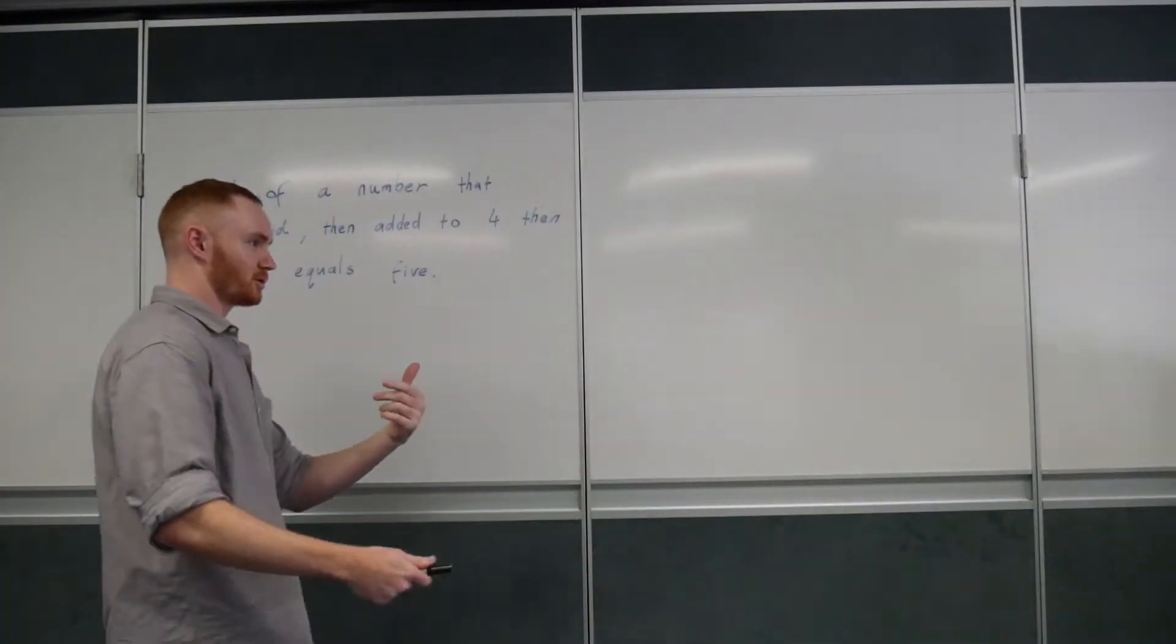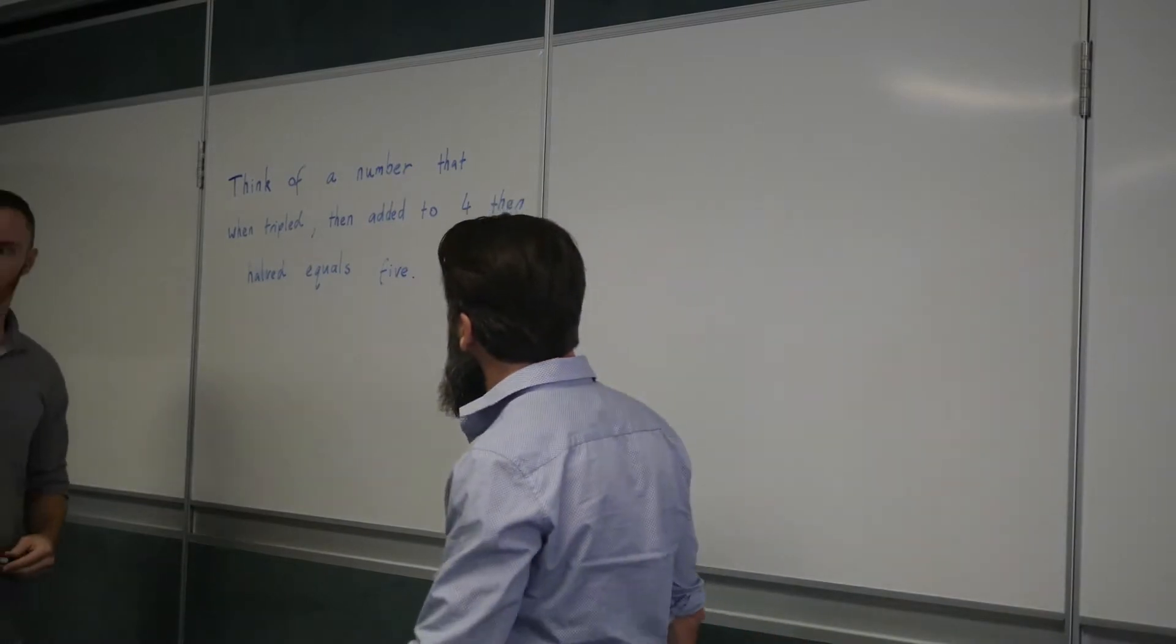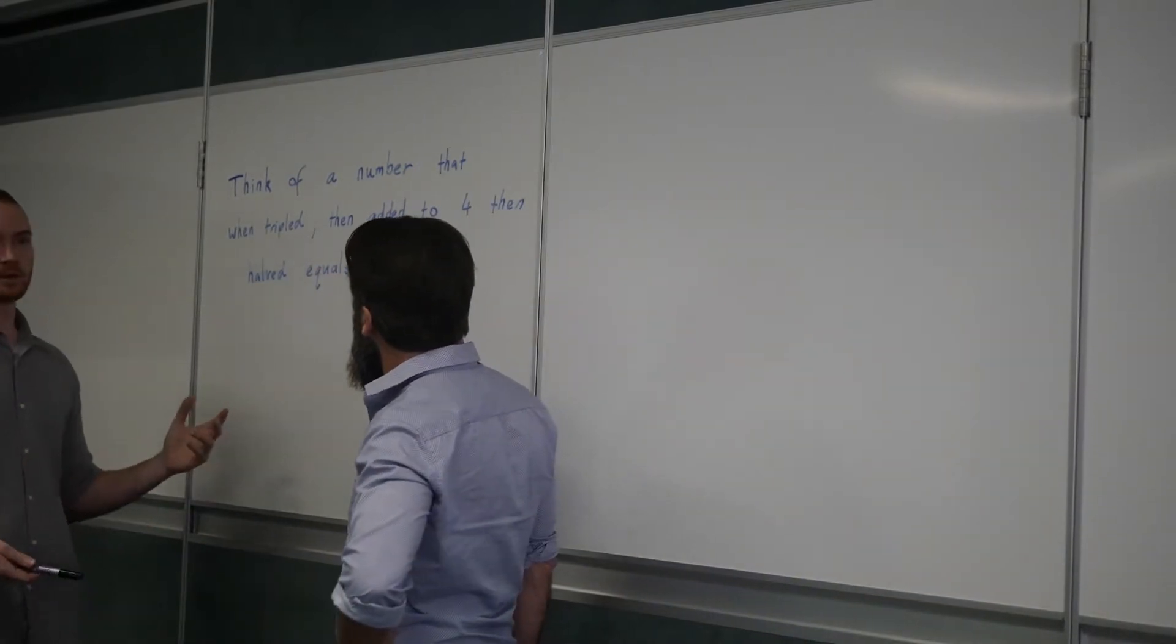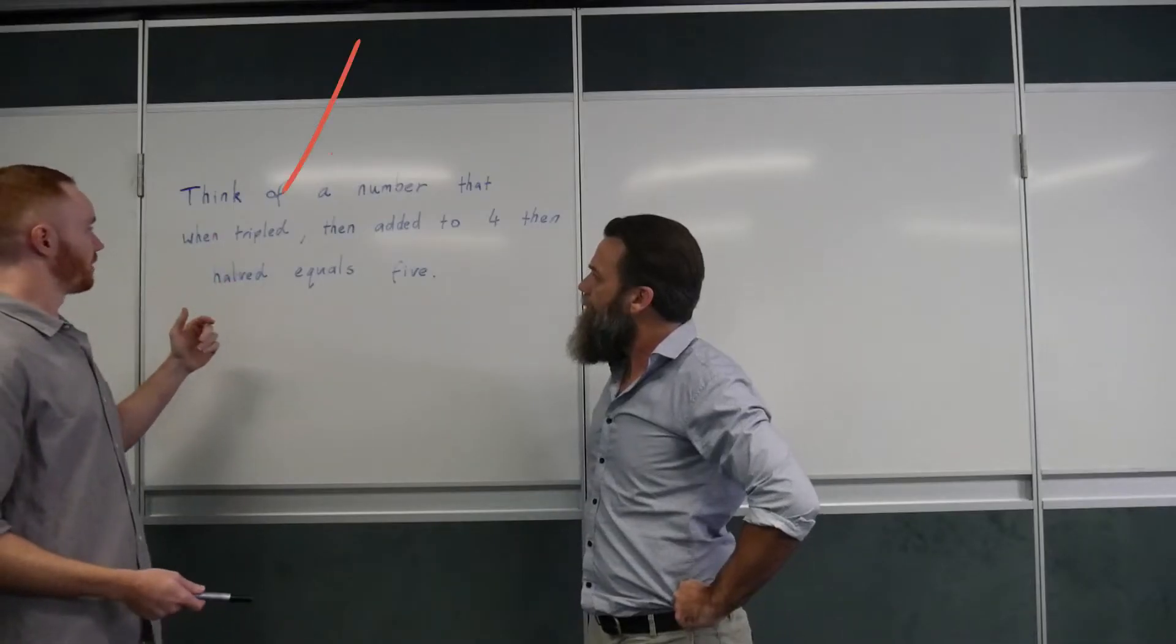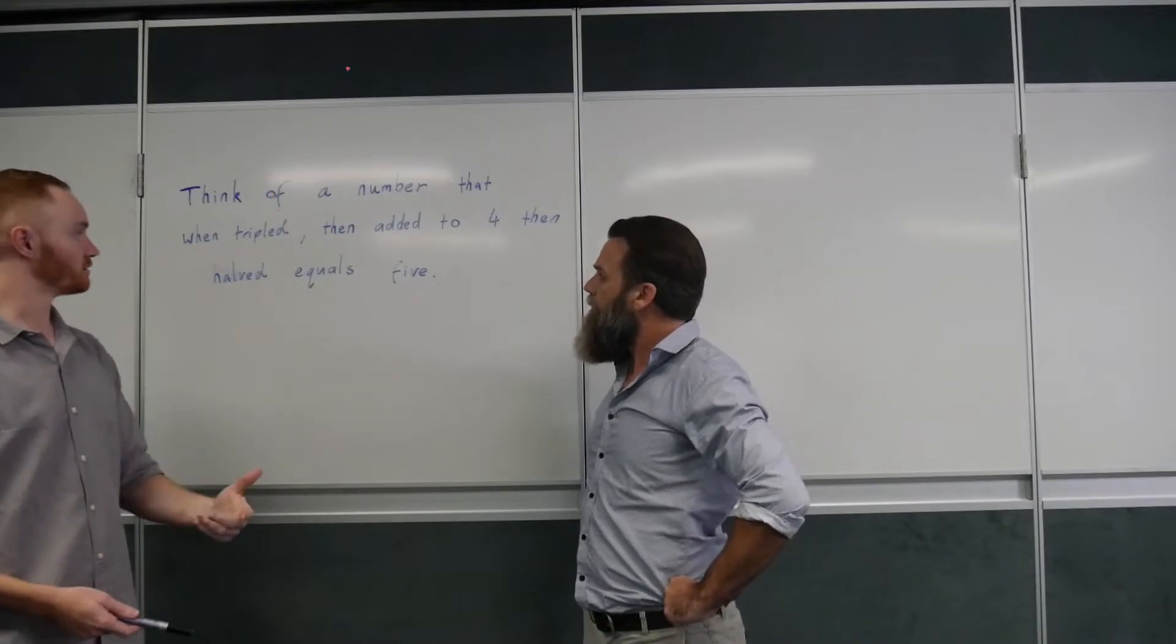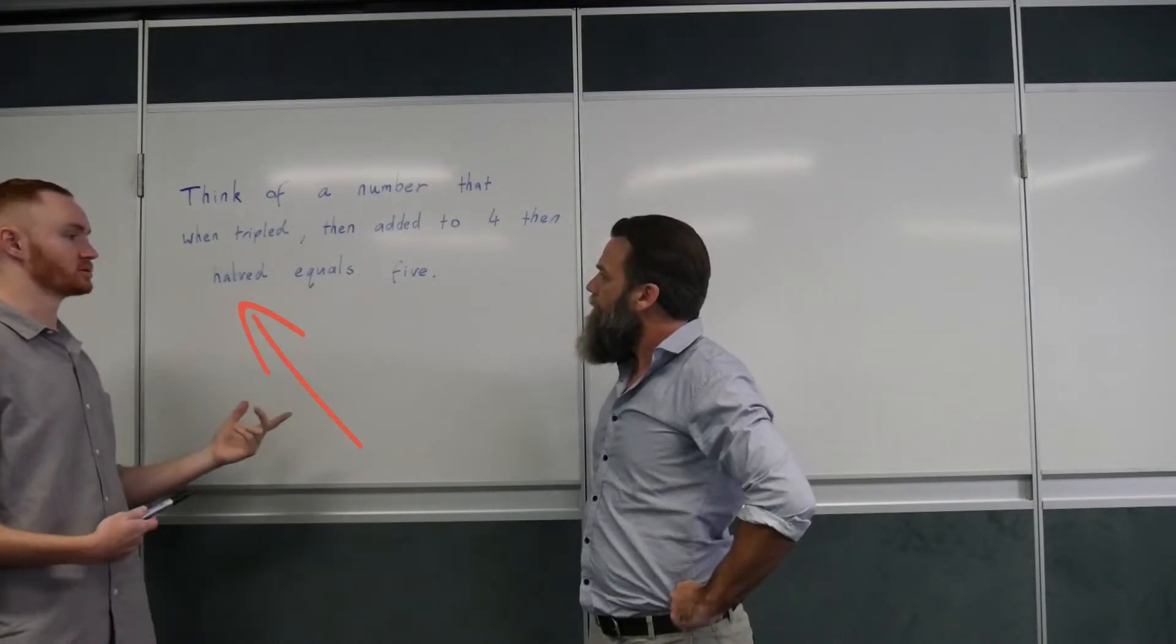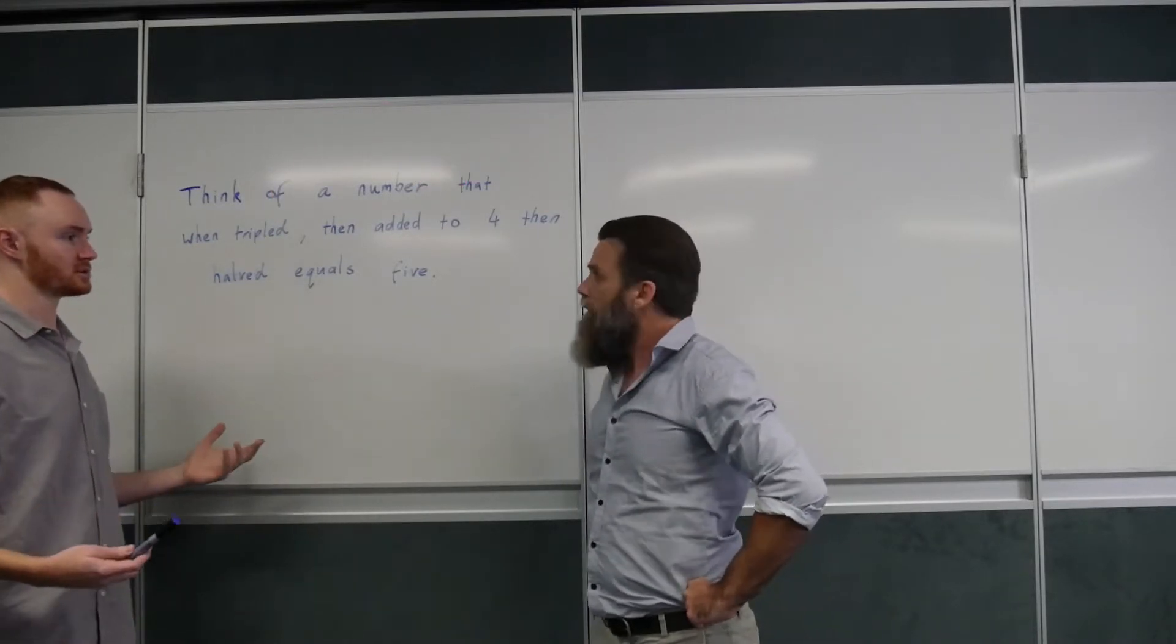Mr. Wilkie, can I go ahead with something? Sure man. I'm just having a look at this problem here. I'm trying to think of a number that when tripled, then added to 4, then halved equals 5. I just have no idea where to start.